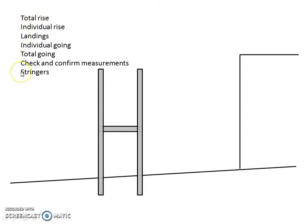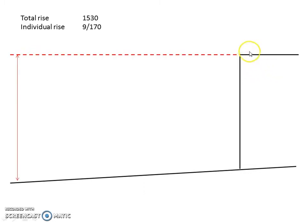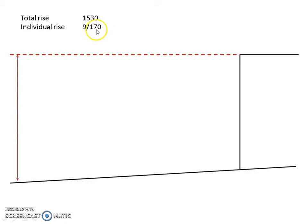Here are the steps from the first video — they're all exactly the same steps. In the first video we crossed out landings because we didn't deal with them, but we will be dealing with them in this video, and that makes a little bit of a difference when we get to our goings. We're going to work out our rises first, then our landings, then our goings, and finish by checking all our measurements. We measured a total rise of 1530. We divided it by a trial rise and ended up with nine rises at 170 each.